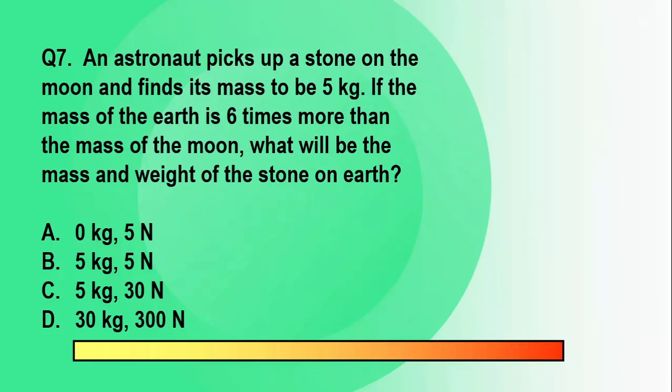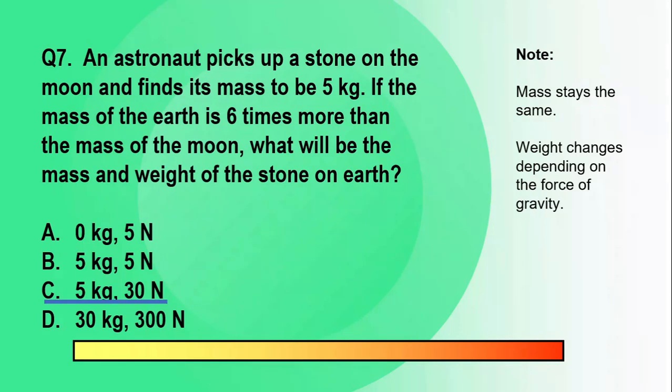The correct answer is letter C, 5 kilograms and 30 newtons. Just remember here that the mass stays the same. Thus, whether you are on the moon or Earth, the mass is still 5 kilograms. Mass refers to the amount of matter, whereas weight depends on the pull of gravity. So since the pull of gravity on Earth is 6 times more than that of the moon, then the weight of the stone on Earth is 30 newtons.